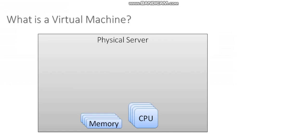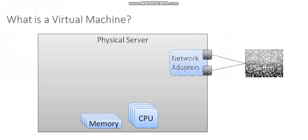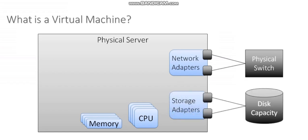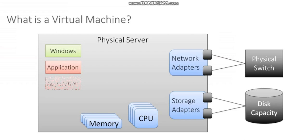So when we purchase a physical server, it comes with memory, CPU, network interface cards, and adapters to connect to the disk capacity of that physical server. It comes with all that hardware built in, and then we install some operating system — in this case, let's assume it's Windows — and then we can run applications. All of these applications run inside of our operating system, and the operating system kind of owns that hardware.